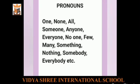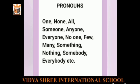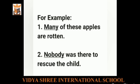The fifth category is indefinite pronouns. As the name suggests, indefinite means something which is not definite or not known. Sometimes we have to use pronouns for people or things whose number is not known or cannot be determined, and these are called indefinite pronouns. For example, one, none, all, someone, anyone, everyone, no one, few, many, something, nothing, somebody, everybody, etc. For example, 'Many of these apples are rotten' — here many is an indefinite pronoun. 'Nobody was there to rescue the child' — nobody is also an indefinite pronoun.